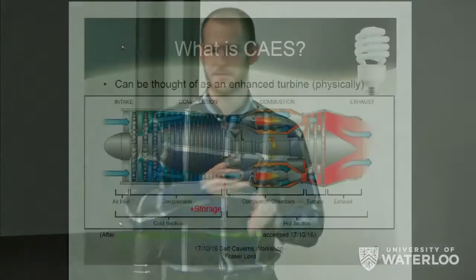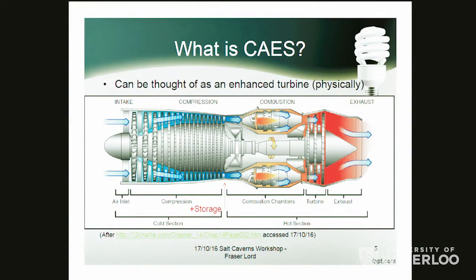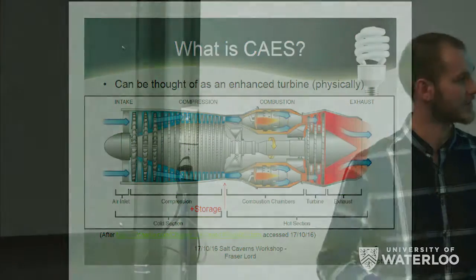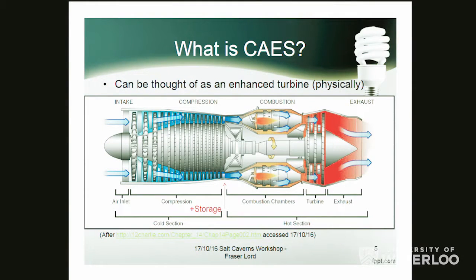As a reference point for thinking about CAES, it's initially easiest to think about it as a natural gas turbine — in this example, something like an airplane engine, but power-generating turbines work very similarly. Typically, you have the compression half of the turbomachinery and then the combustion and expansion stages where the power is generated. In CAES, it's energy storage because we have storage in between these halves, which breaks the facility into two components. This has several advantages we'll talk about.